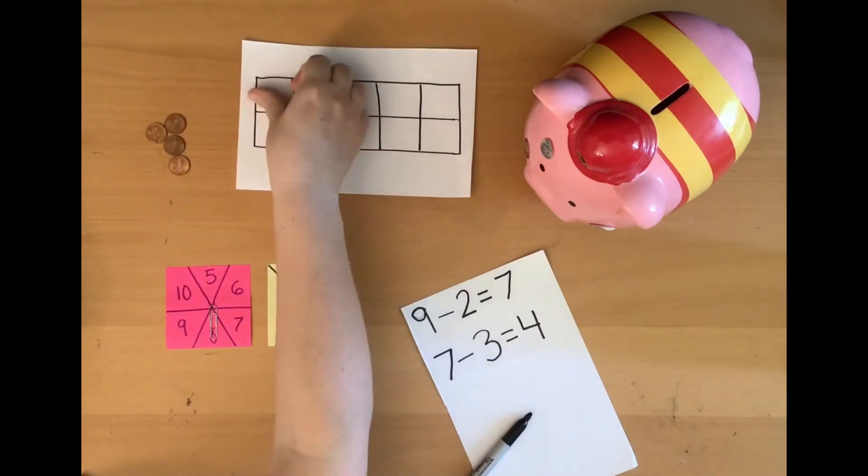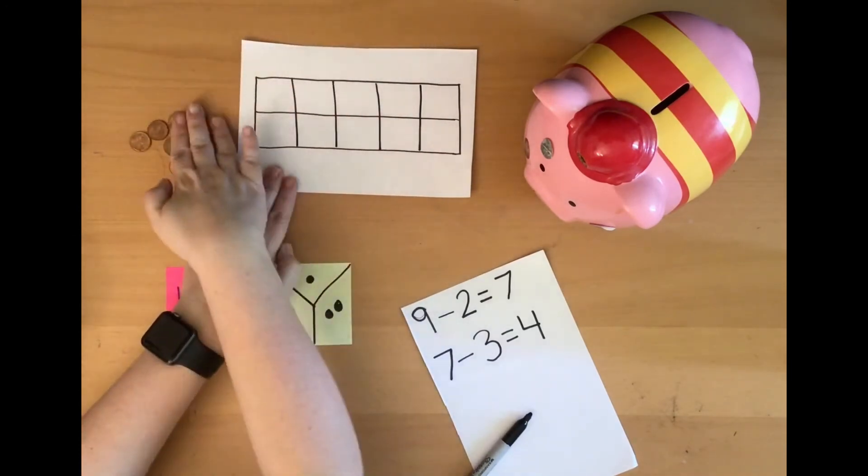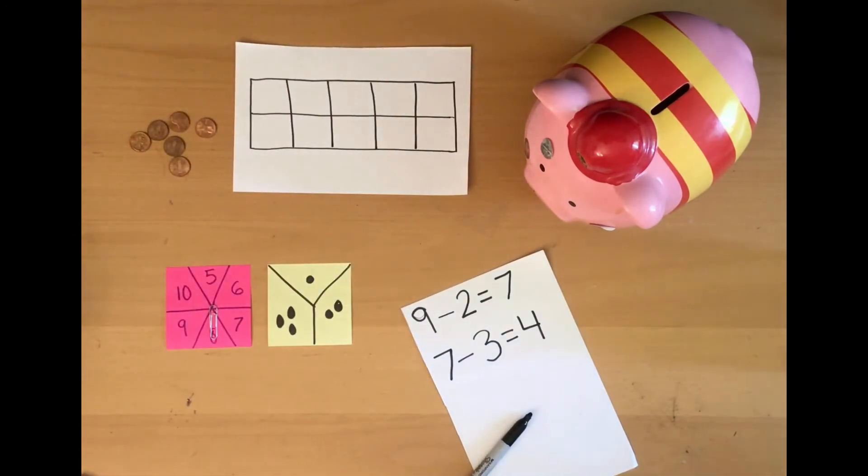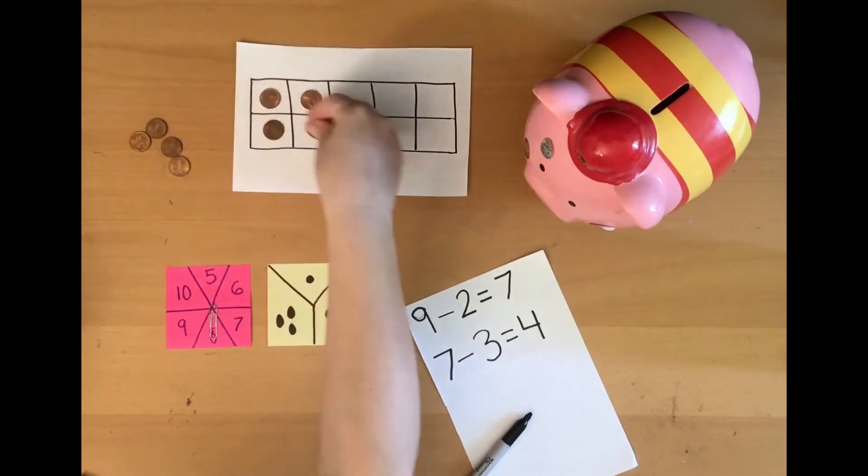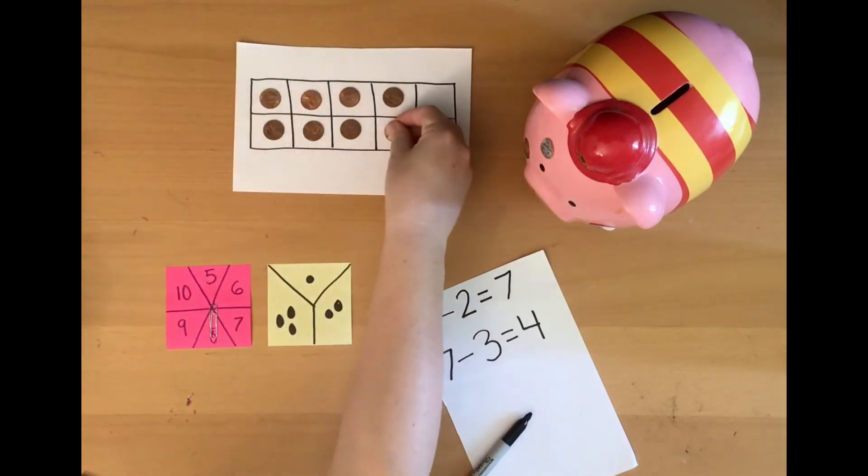1, 2. You know what? Let's try pairwise this time. What do you think? 1, 2, 3, 4, 5, 6, 7, 8.